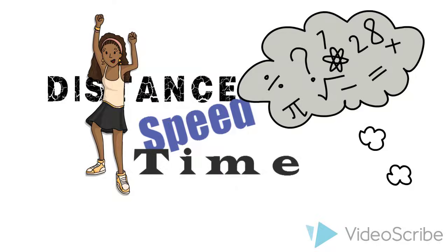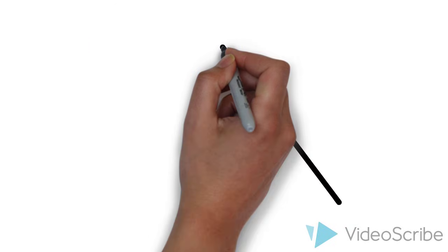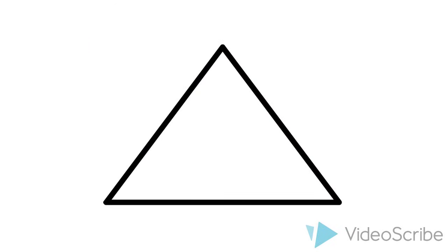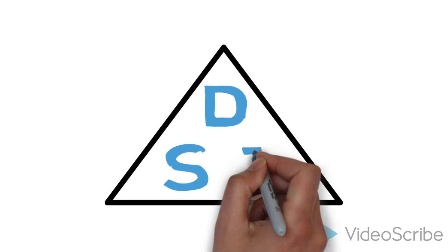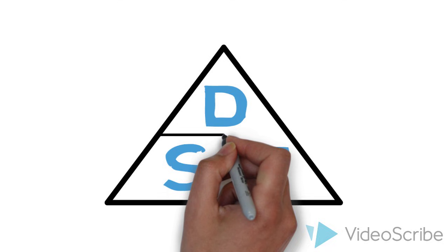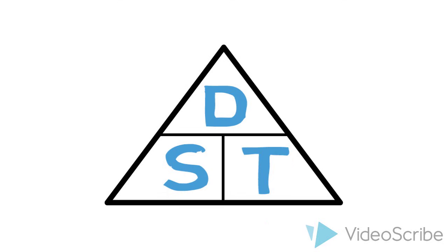First, the way to remember how to lay out the letters in the triangle is that they are in alphabetical order: D, S, T. Then add dividing lines between them. The reason for these will become clear later.